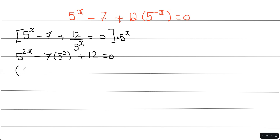So you could factor this by saying 5 to the power of x minus 4, times 5 to the power of x minus 3. Of course, it equals 0.